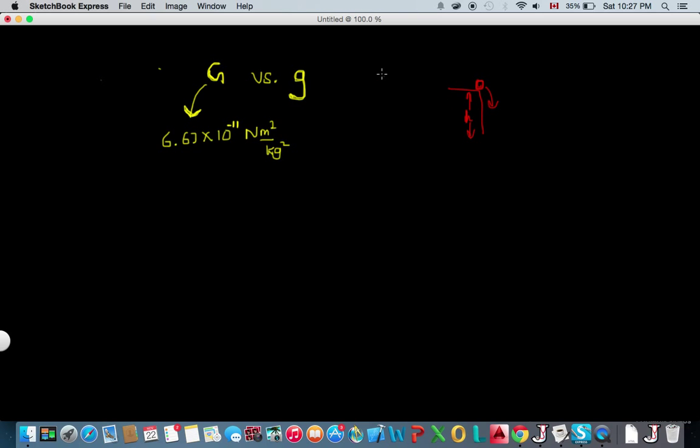So lowercase g is the acceleration due to gravity, and the value of g is changing. It's different on different planets, and in fact this value of g changes as you go higher up in the atmosphere.